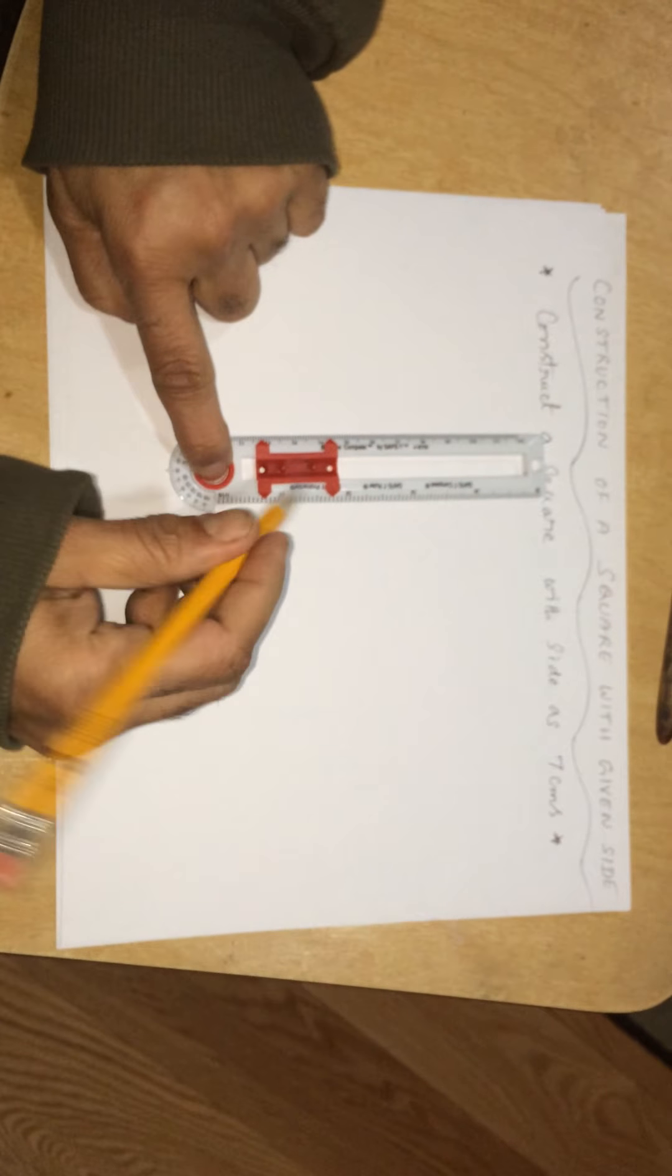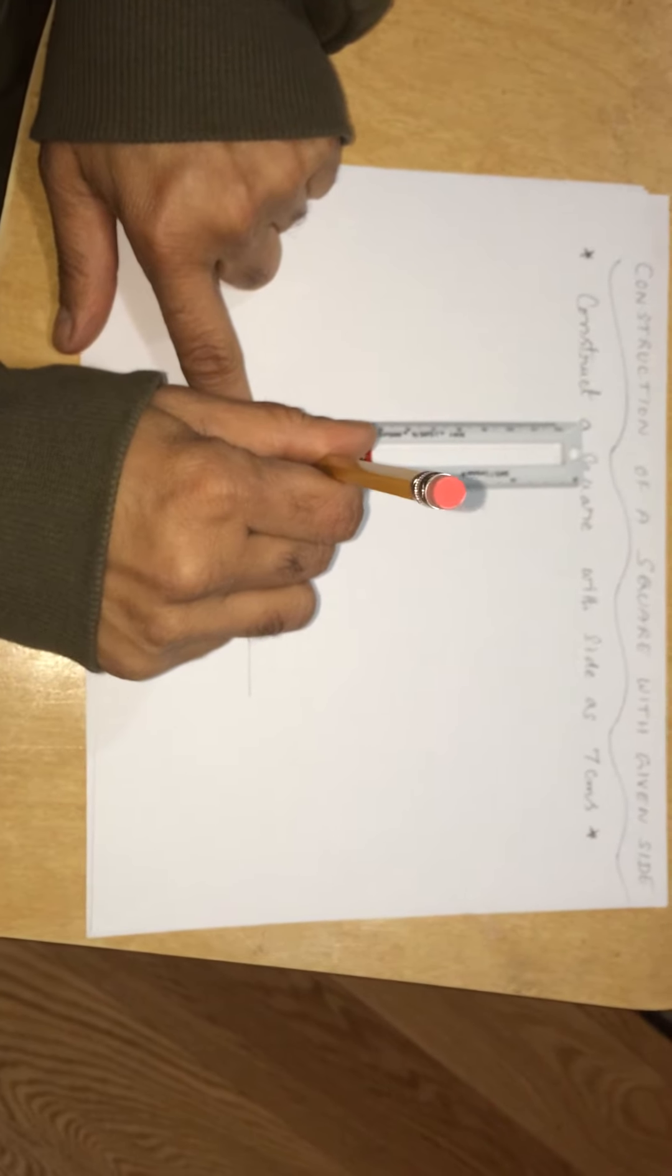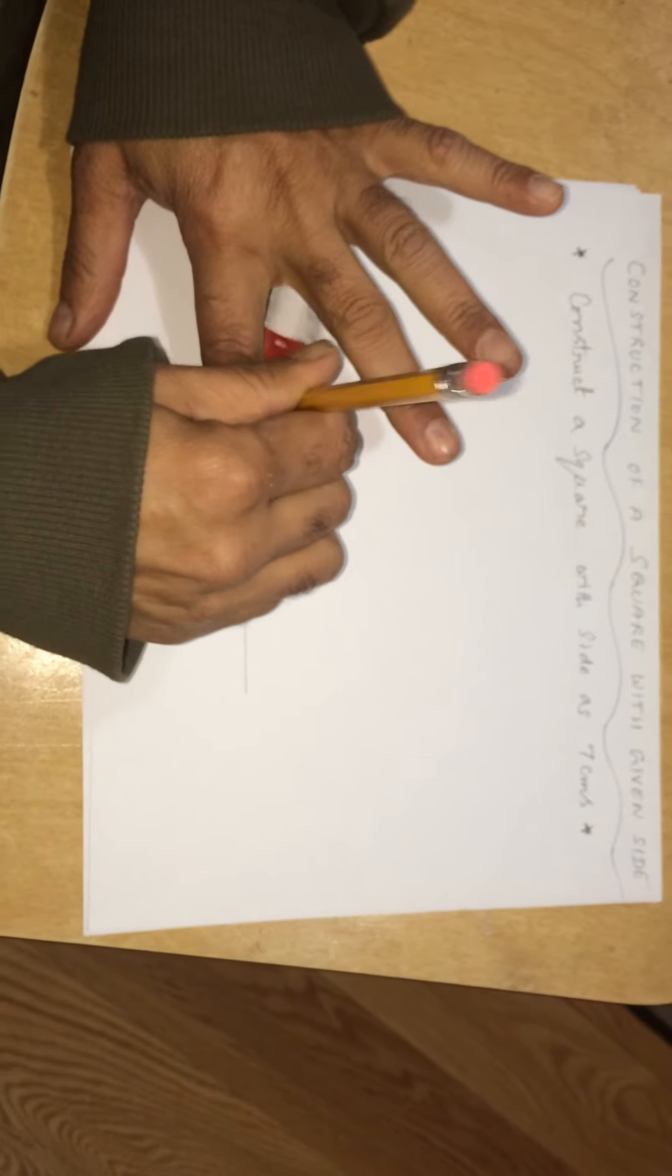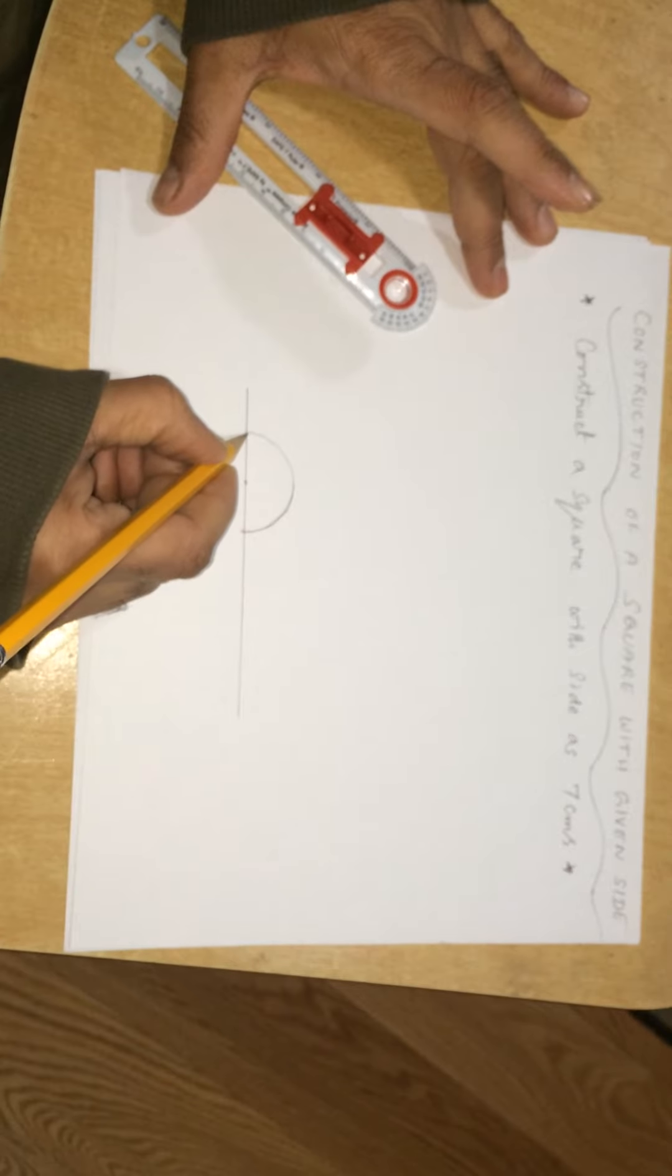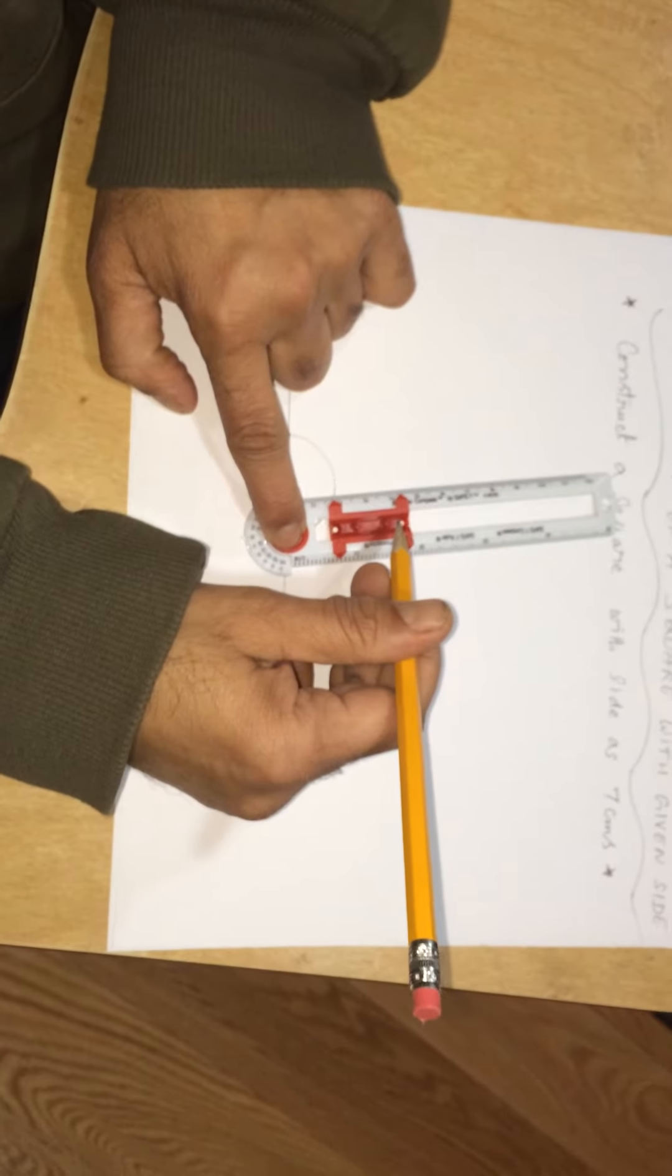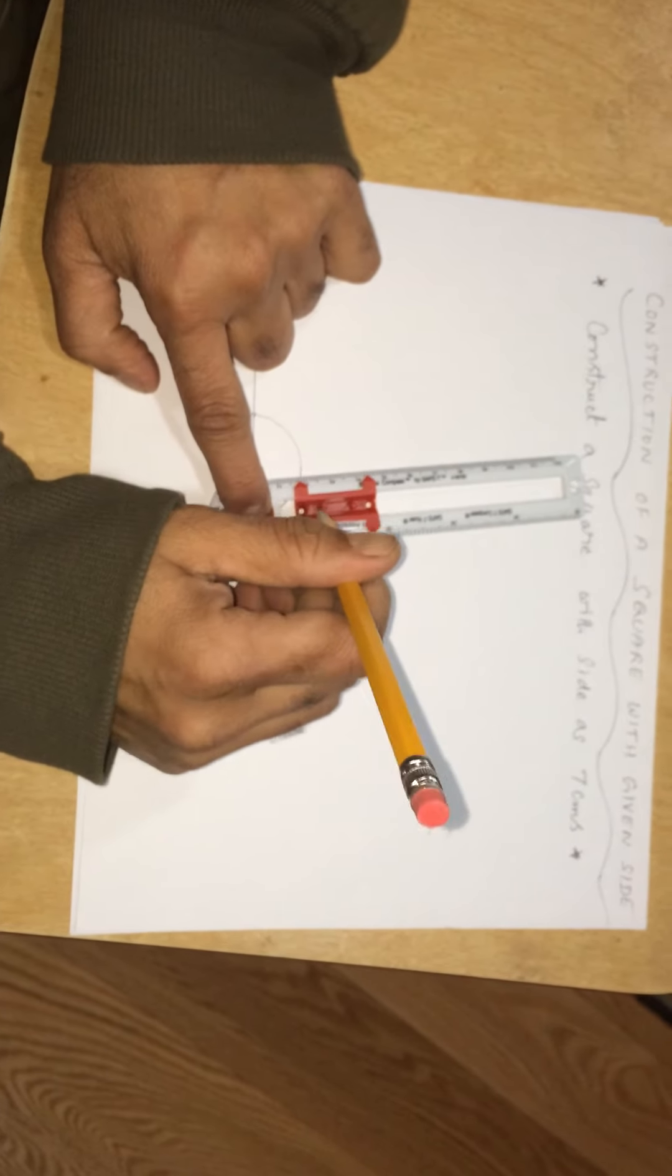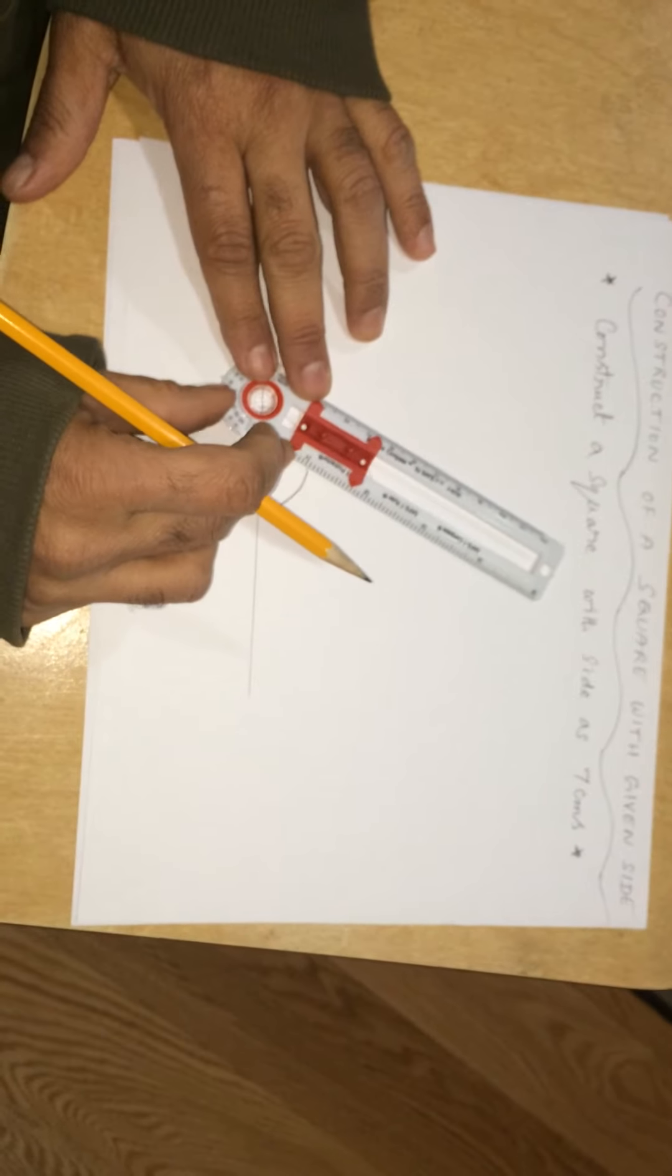With A as center, I am drawing an arc with this first hole. This is second hole. With this first hole, an arc like this. This is cutting this line at these two points. With this point, again, I take the center and draw another arc, keeping the pencil at the second hole here. I draw an arc like this.